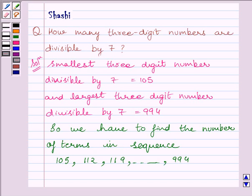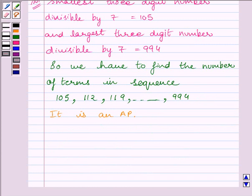In this sequence, the first number is the smallest 3-digit number which is divisible by 7, and the last number of the sequence is the largest 3-digit number which is divisible by 7. So clearly, this sequence is an AP sequence as the common difference between the consecutive terms is equal to 7.